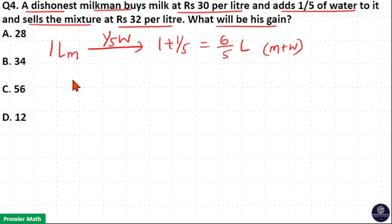Now, cost price of 1 litre milk is same as the cost price of 6 by 5 litre mixture, that is milk water solution, which is equal to 30 per litre, that is Rs. 30, because cost price of water is 0.